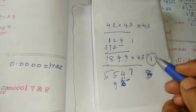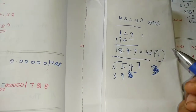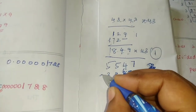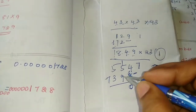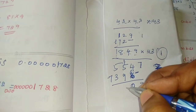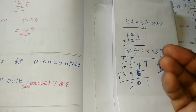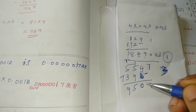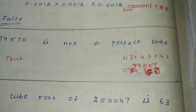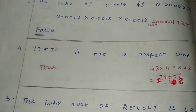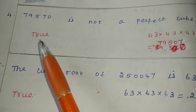Continuing: 4 × 4 = 16, 16 + 3 = 19, balance 1; 8 × 4 = 32, 32 + 1 = 33, balance 3; 1 × 4 = 4, 4 + 3 = 7. The final factored value comes out to 79570, which is not a perfect cube. So the statement is correct — the answer is True.